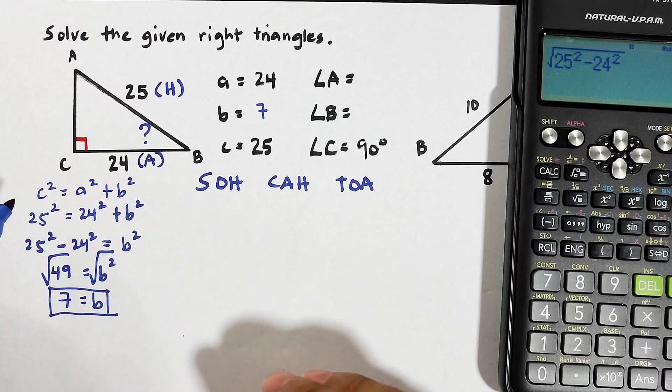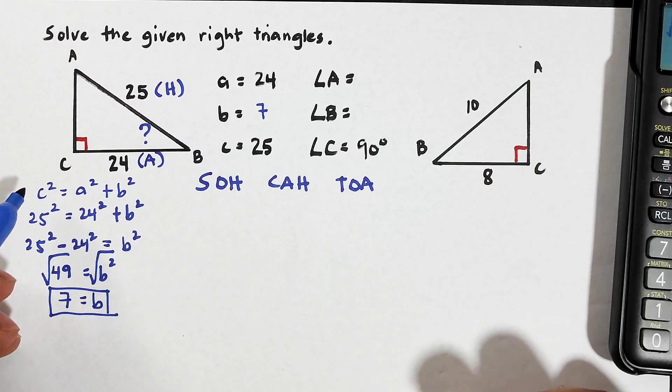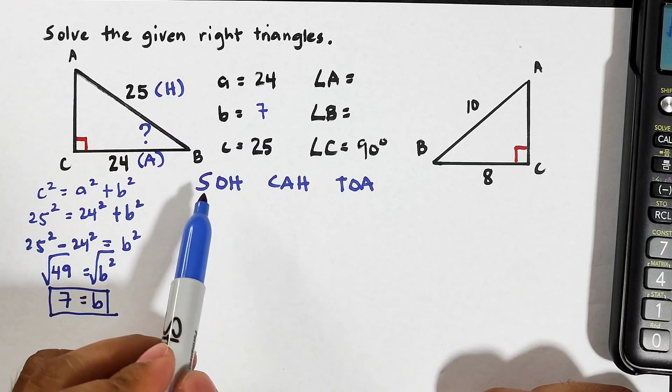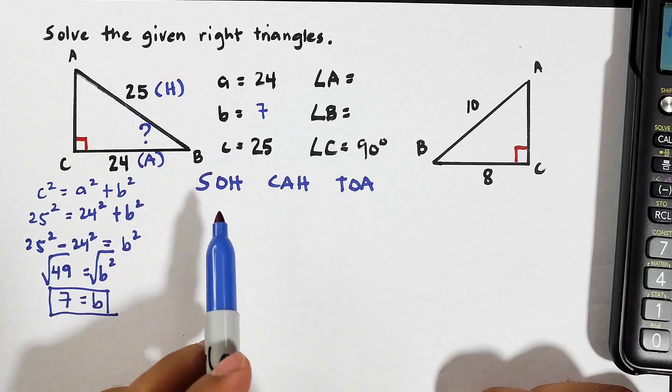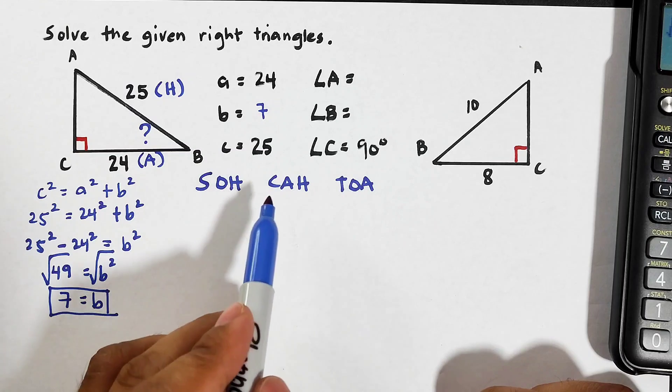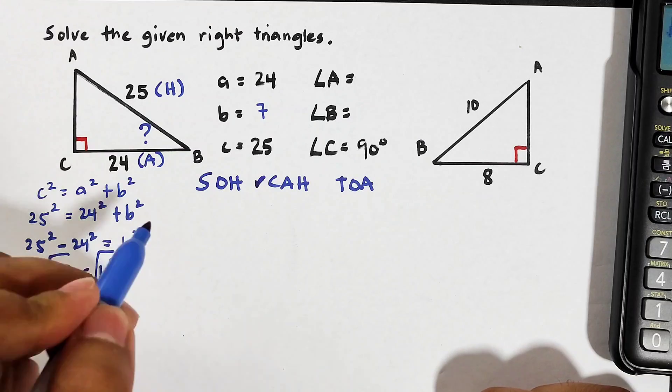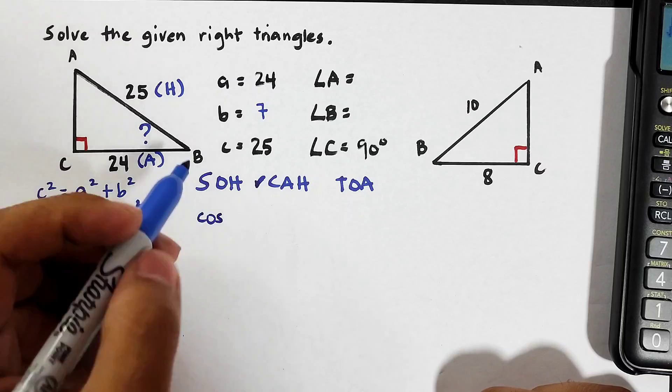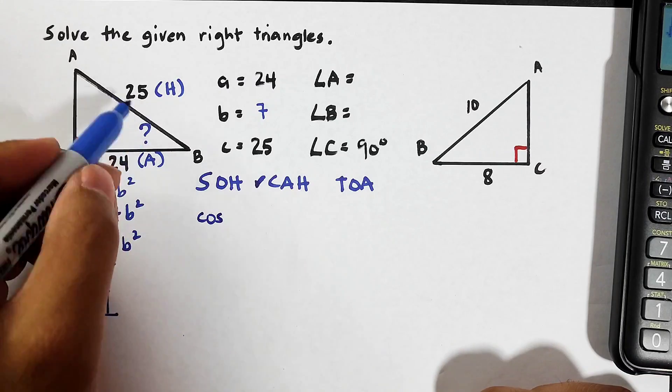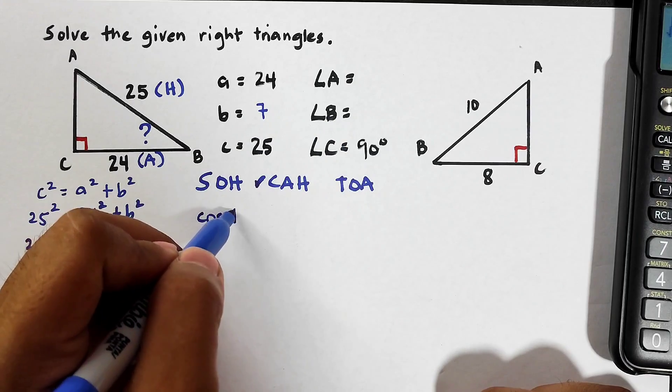To figure out which ratio is useful for this problem, what we need to do is to see which ratio has the A and H. So as you can see we need to use the CAH. In other words we will use the cosine ratio. So this will be cosine and then we will represent this as angle B. So that is cosine B.